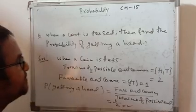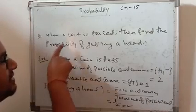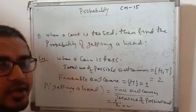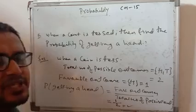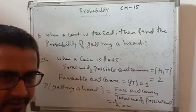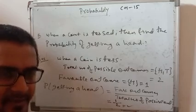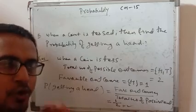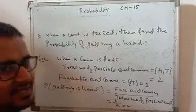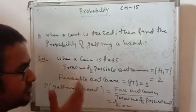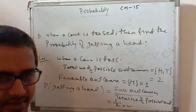The experiment here is tossing a coin. There are many such random experiments — those whose outcomes you know but what will come exactly you don't know. This is a simple example of probability.